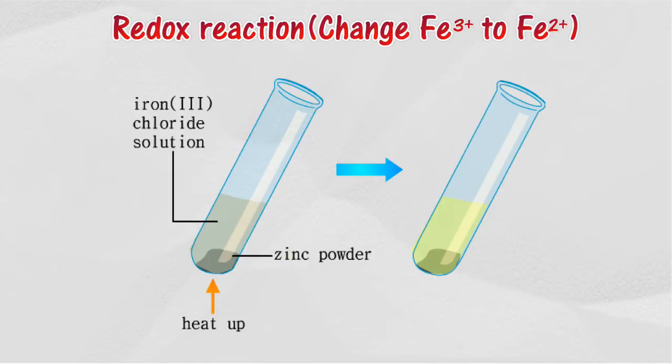The color of ferrum 3 ions is yellowish-brown solution. The color of the ferrum 2 ion solution is pale green.